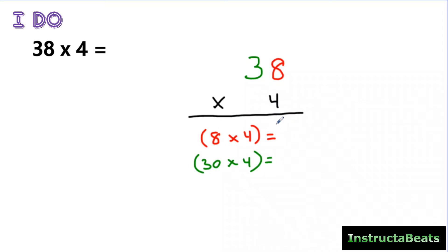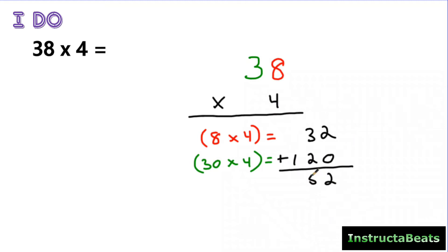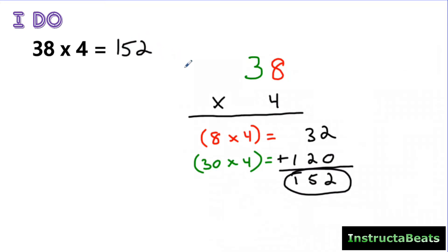All we're doing is solving the product of each of these parts. So 8 times 4 is 32. I know 3 times 4 is 12, plus my zero is 120 — so I make sure my place values are lined up. Then I add these partial products together and I get the product of 152. This matches exactly what we did with the array: we split up 38 into 30 groups and 8 groups using place values, and there are 4 in each group, giving us 152.